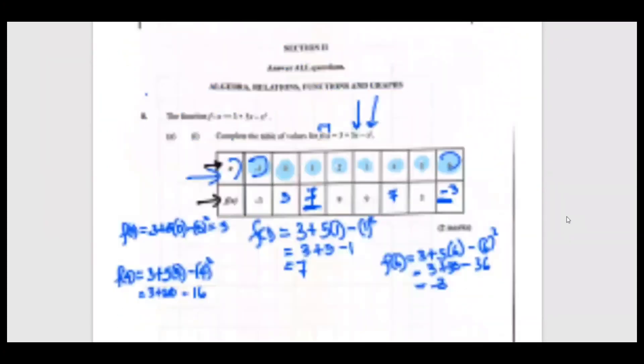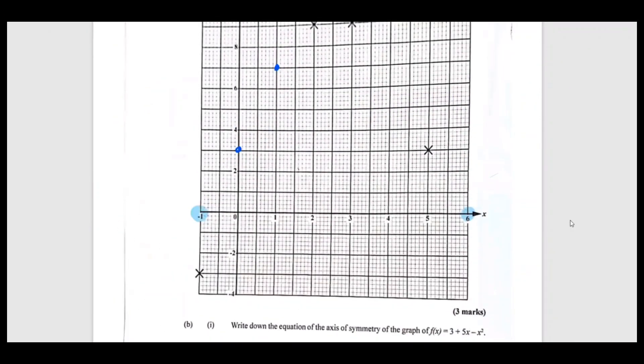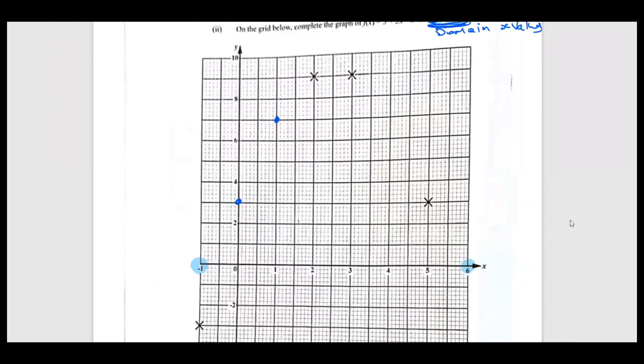We had 4 with 7 and 6 with negative 3. So 4 with 7 is right over this side here, and 6 with negative 3 is right here, I agree.